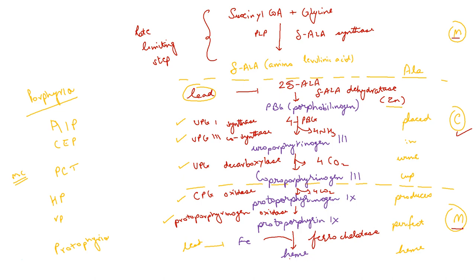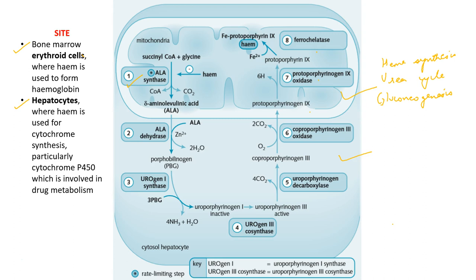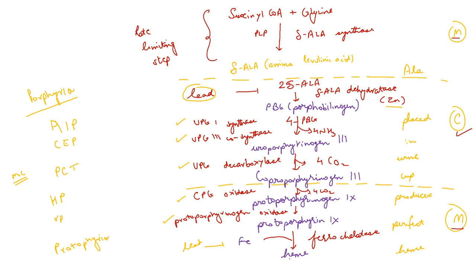Quick recap of heme synthesis: it occurs in both the liver and in the bone marrow erythroid precursors. It does not occur in mature RBCs because they do not contain mitochondria. It requires both mitochondria and cytosol. Heme synthesis, urea cycle, and gluconeogenesis are the only three processes requiring both compartments. There are eight steps: the first step and the last three steps occur in the mitochondria, whereas the remaining steps occur in the cytosol.